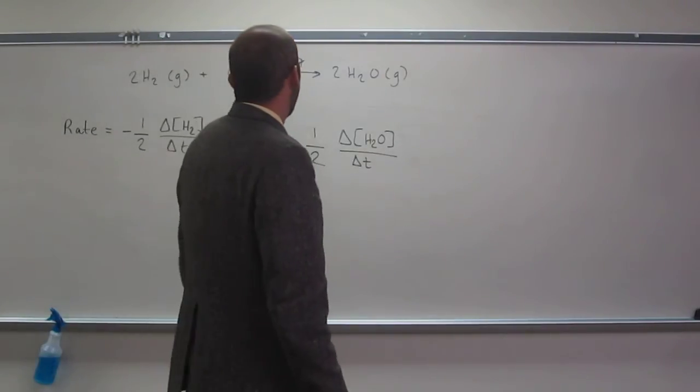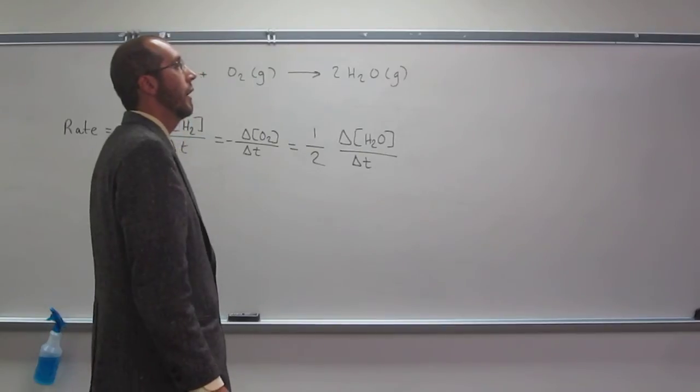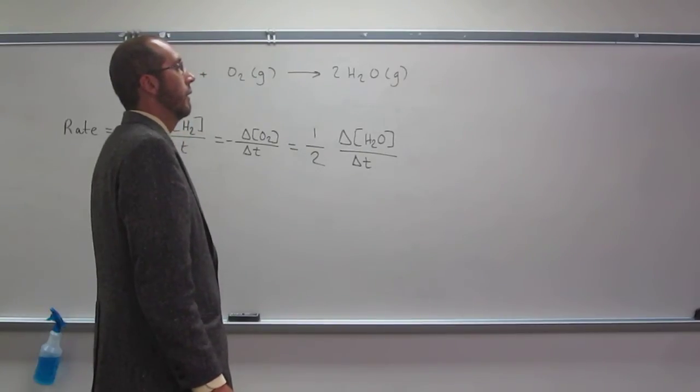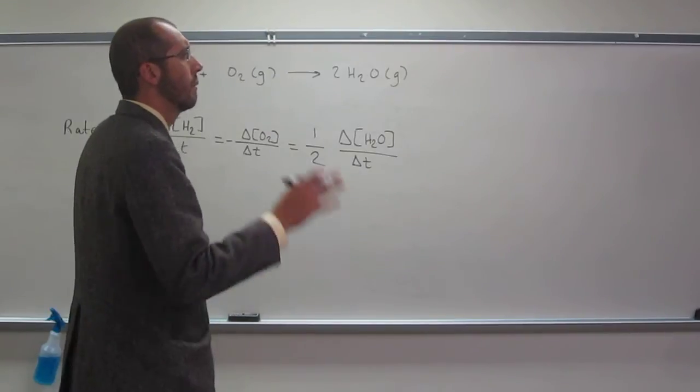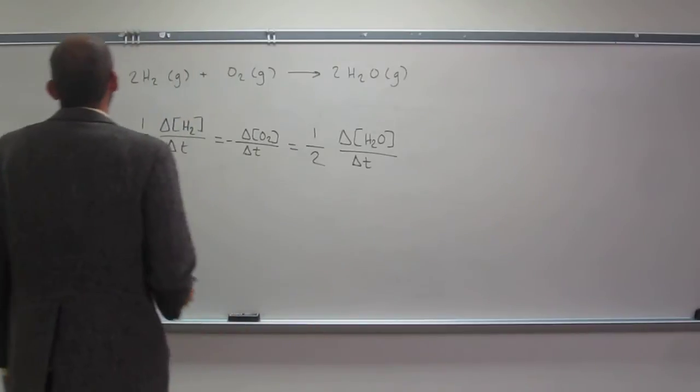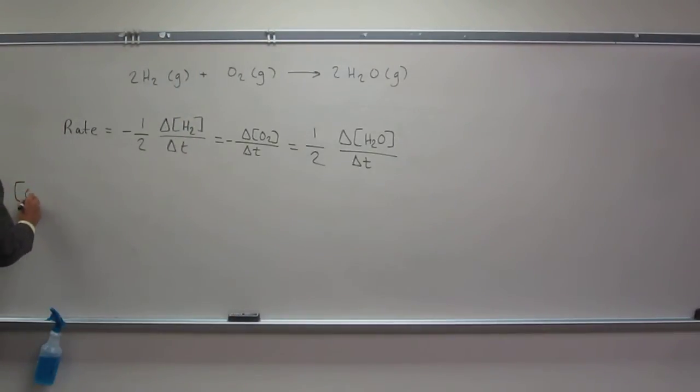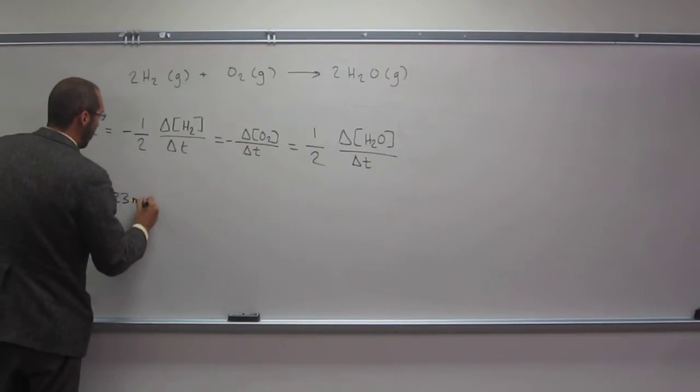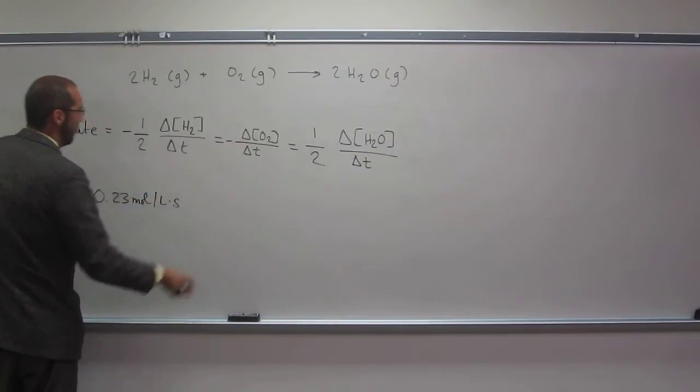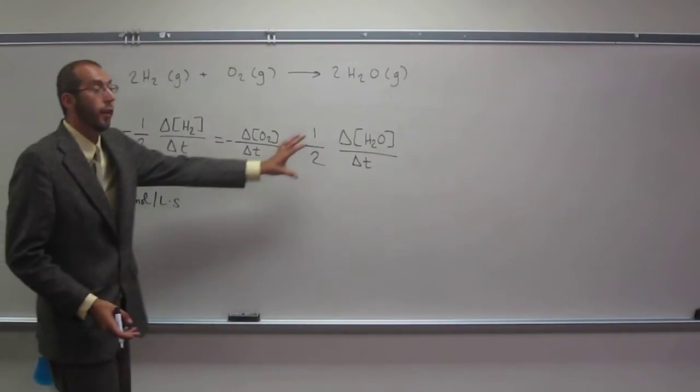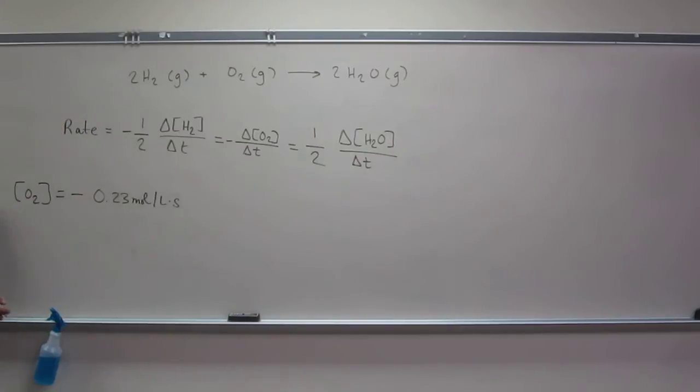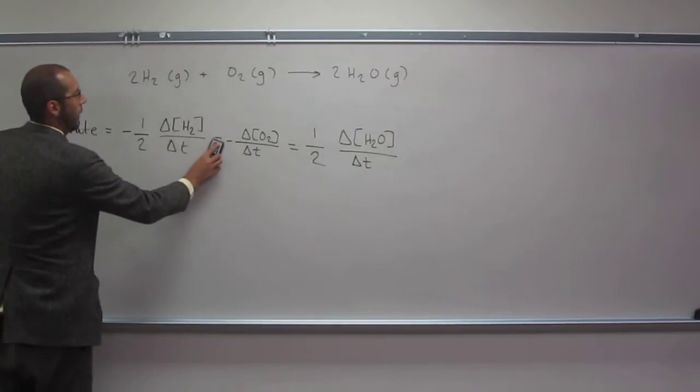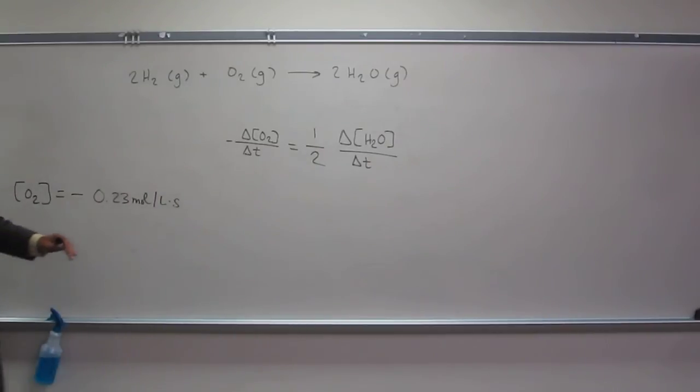And then it says when oxygen is decreasing at 0.23 moles per liter second. So the concentration of oxygen is decreasing at 0.23 moles per liter second. How fast is water increasing? So how do we do this problem? I'm going to erase this part here because we have an equation here.